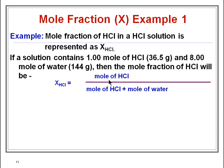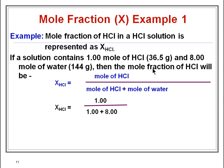The mole fraction of HCl equals the moles of HCl divided by the moles of HCl plus the moles of water. Substituting the values: x(HCl) equals 1 (moles of HCl) divided by 1 plus 8, which equals 9. When we divide 1 by 9 we get 0.111.